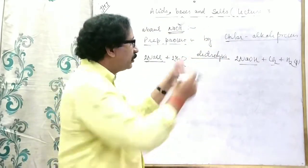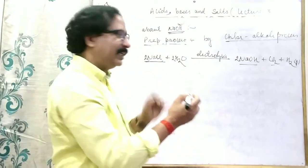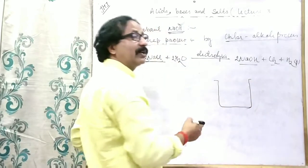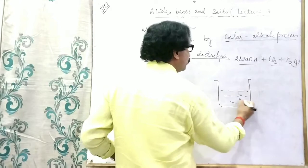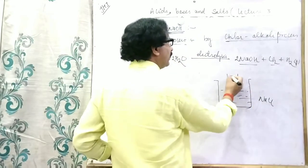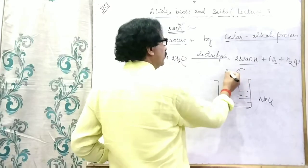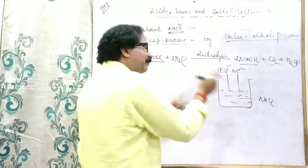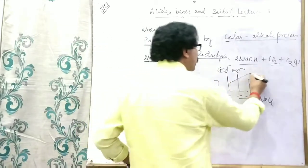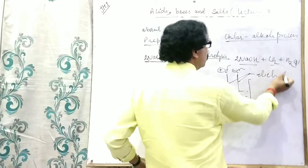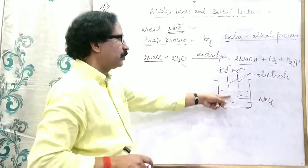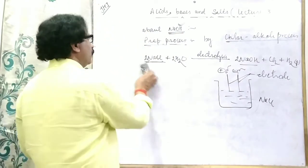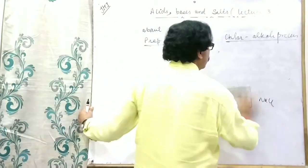It is known as the electrolysis because in a container — just like this — a container which is known as the electrolytic cell. Here we are taking the solution of NaCl with one anode and one cathode: positive and negative. This is the anode, this is the cathode, and we are passing current through these electrodes. Commonly both are known as electrodes, and passing current through them — this is known as the chloralkali process.